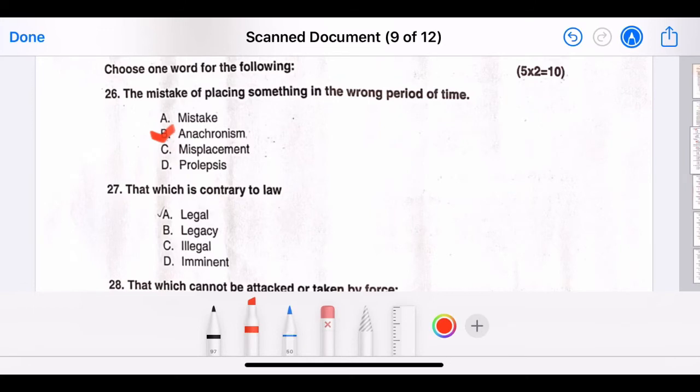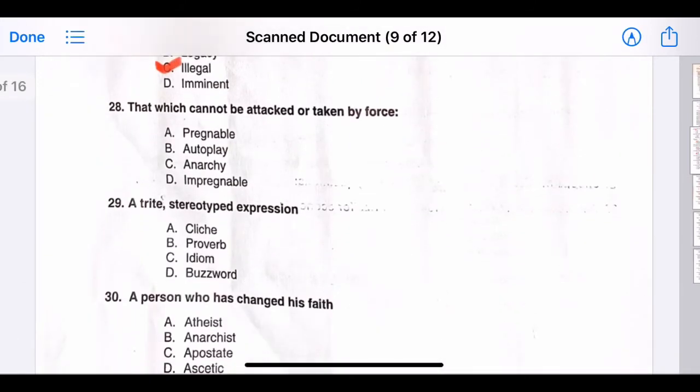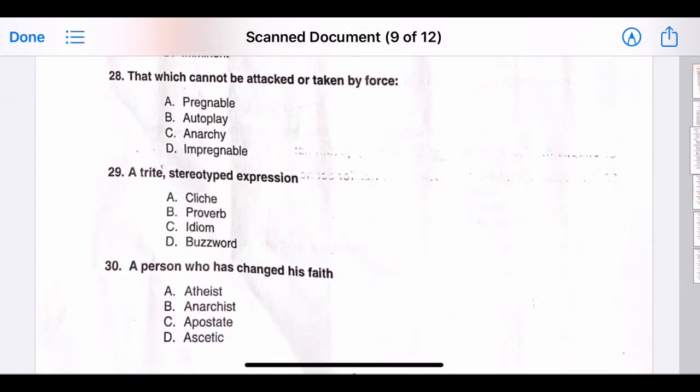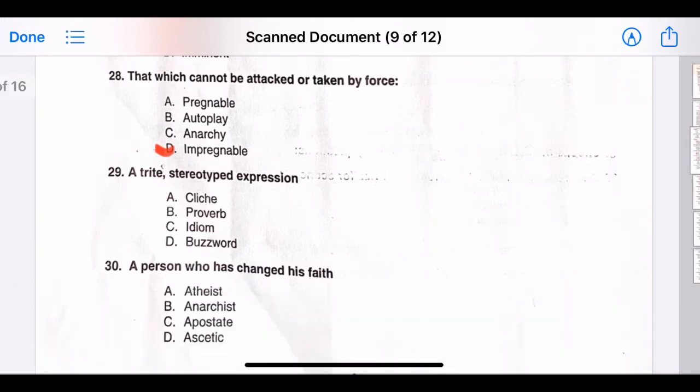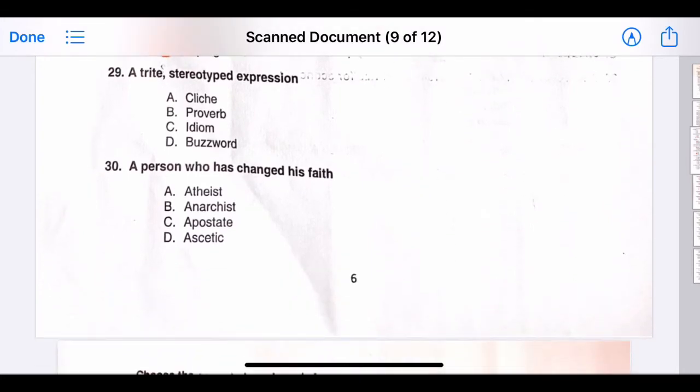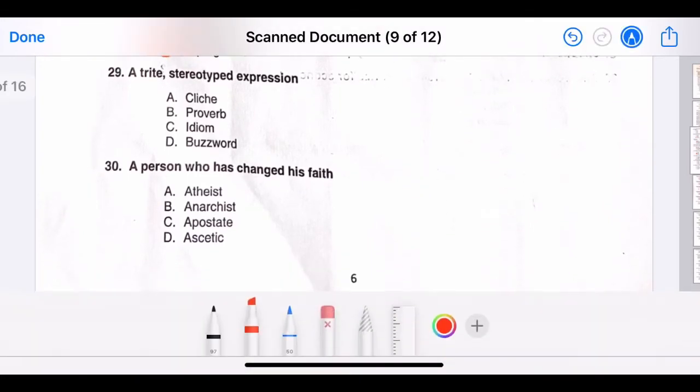Twenty-seven, that which is contrary to law. The correct answer is option C, illegal. Twenty-eight, that which cannot be attacked or taken by force. The correct answer is option D, impregnable. Twenty-nine, a trite stereotyped expression. The correct answer is option A, cliche.